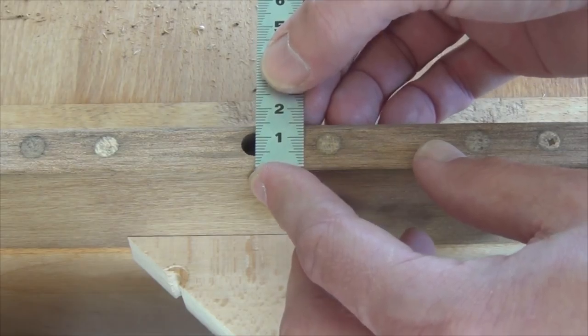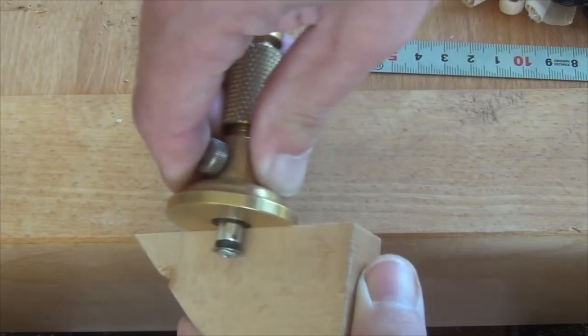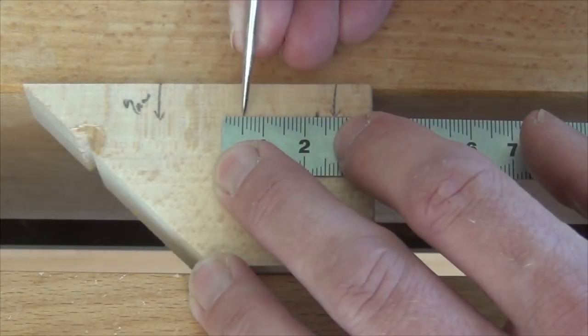Now I have to measure the offset for the dowels and mark a center line for the guide holes. Then I can use my awl to mark the centers.